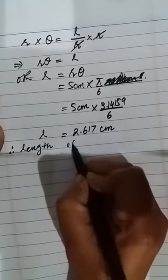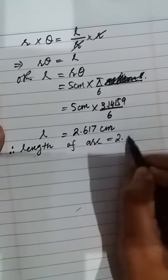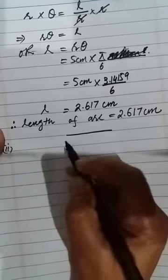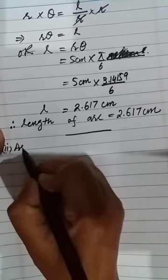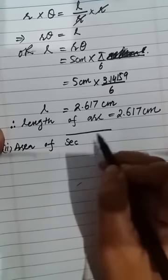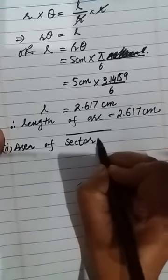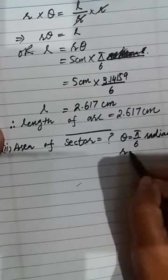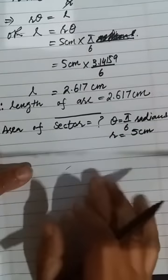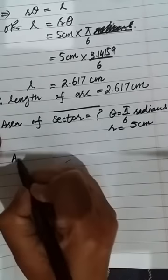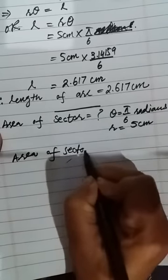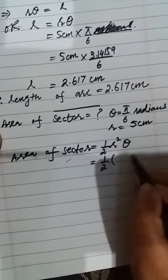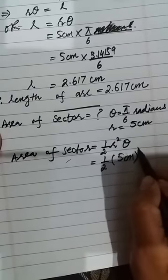Therefore, the length of arc is 2.617 centimeters. Now the second part: we have to find the area of the sector, when theta is pi by 6 radians and r is 5 centimeters. As we know, the formula of the area of sector is half r squared theta.